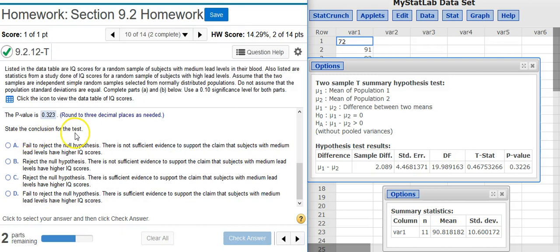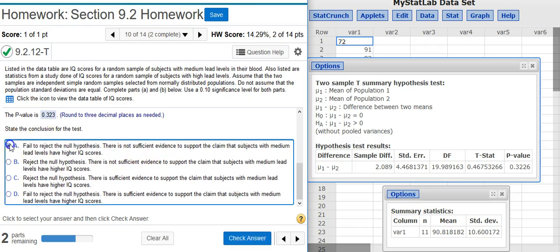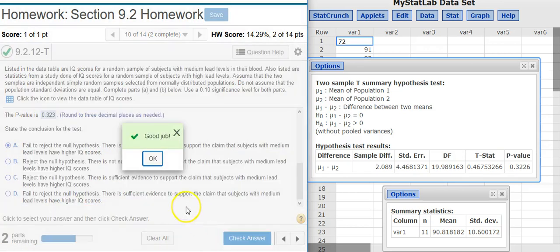Now I'm asked to state the conclusion for my test. p-value of over 30%, we're using a significance level of 10%, 30% is over 10%. So we're outside the region of rejection, which means we fail to reject the null hypothesis. And every time we fail to reject the null hypothesis, there is not sufficient evidence. So we don't want answer option D because that says there is sufficient evidence. We want answer option A because we fail to reject the null hypothesis. And whenever we do that, there is not sufficient evidence. Good job!